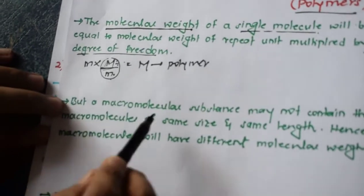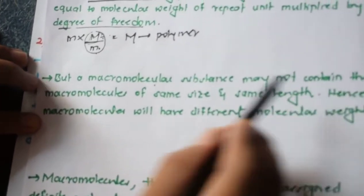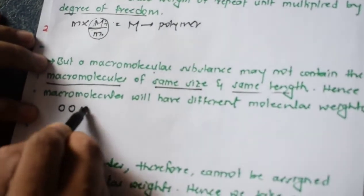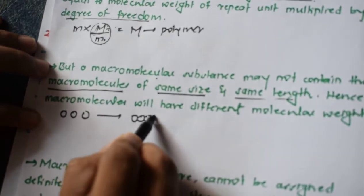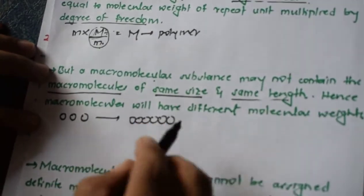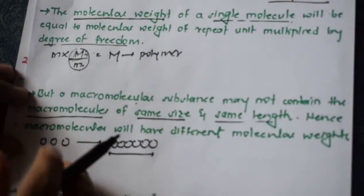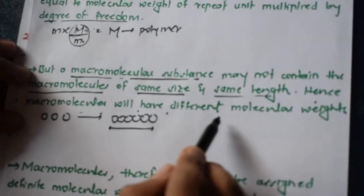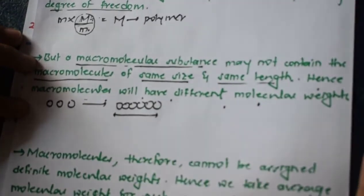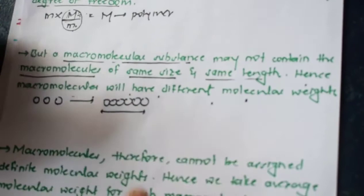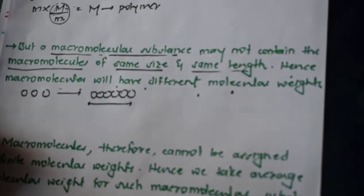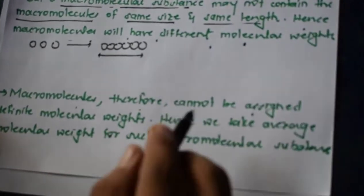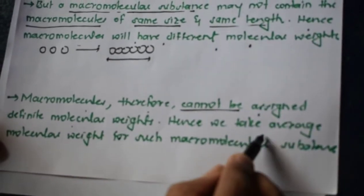However, a macromolecular substance may not contain macromolecules of the same size or same length. The monomeric units combine together to form a polymer, but we don't know the size — it may not be the same. So how can we determine the molecular mass of the substance? Macromolecules will have different molecular weights, so we cannot determine it using this simple formula. Therefore, macromolecules cannot be assigned a definite molecular weight.